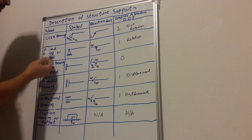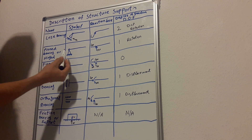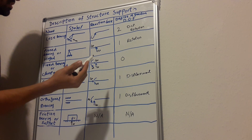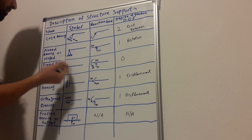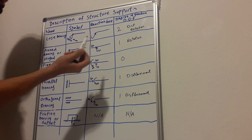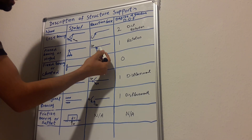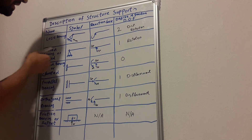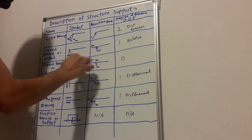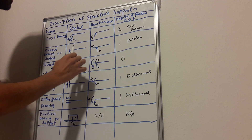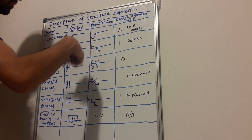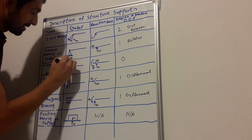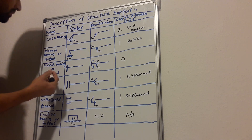The second one is a pin bearing or hinged bearing. In different countries this support has different names — in Europe it's called pin bearing, in others it's called a hinge. This one represents reaction forces; it can resist both horizontal and vertical forces. The degree of freedom is only one because it can only rotate — it cannot slide horizontally or vertically.